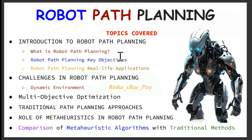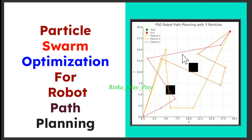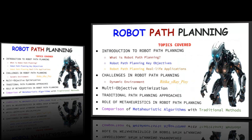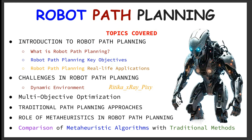First we will learn what is robot path planning and its key objectives, like how we can find the optimal path for a robot and how we can move the robot while avoiding obstacles. Second, we have different challenges in robot path planning, such as dynamic environments and unknown obstacles. Third, we have multi-objective optimization, where we have multiple objectives like reducing robot time, energy consumption, and also ensuring robot safety while moving.